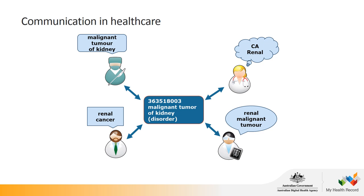The flip side is that one concept could be expressed in many different words. In healthcare, there are many different specialties and clinicians, and each can have a different way of expressing the same thing. The specialist may record a diagnosis as renal cancer, whereas the surgeon refers to it as malignant tumour of kidney, the nurse knows it as CA renal, and the radiographer sees a renal malignant tumour. Humans can quickly discern these mean the same concept, but it is very difficult for a machine or clinical information system to do so.